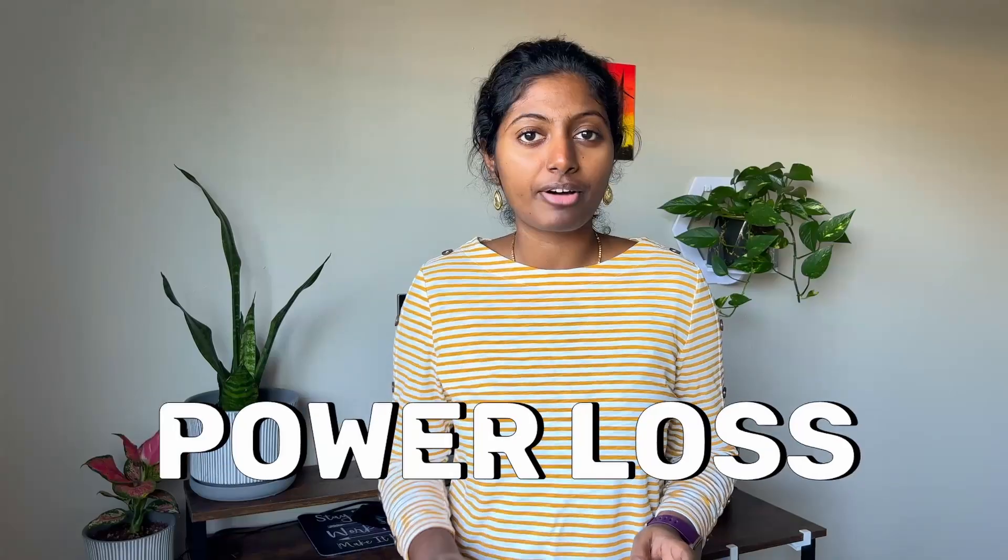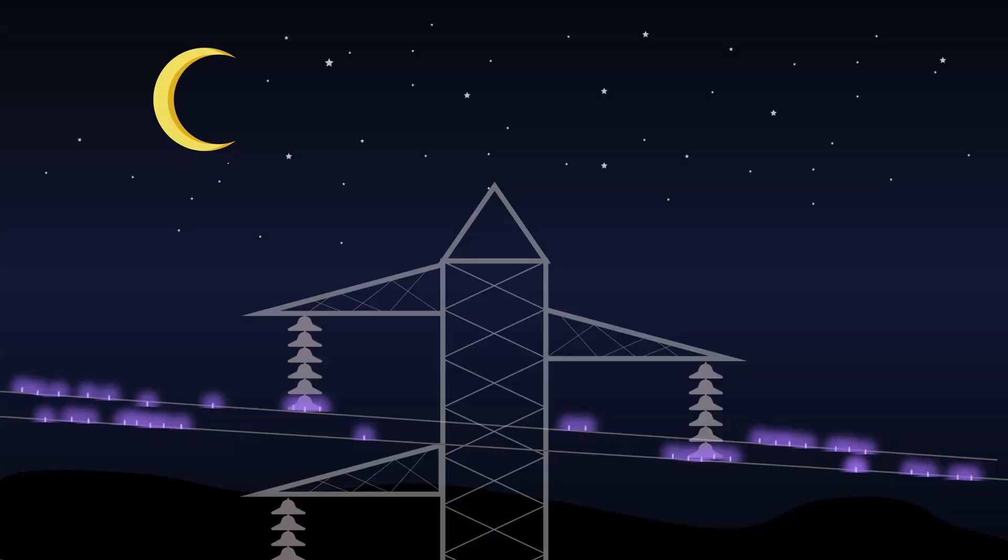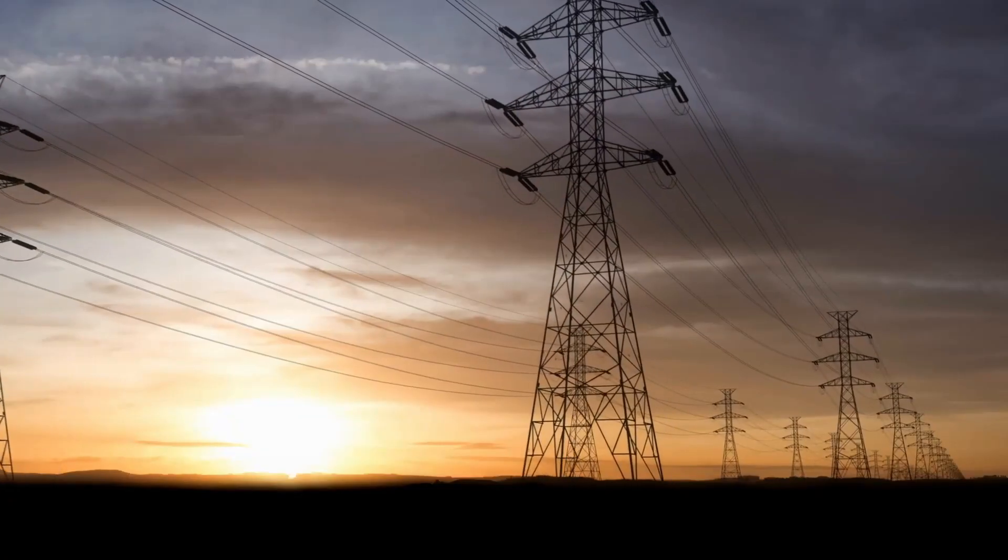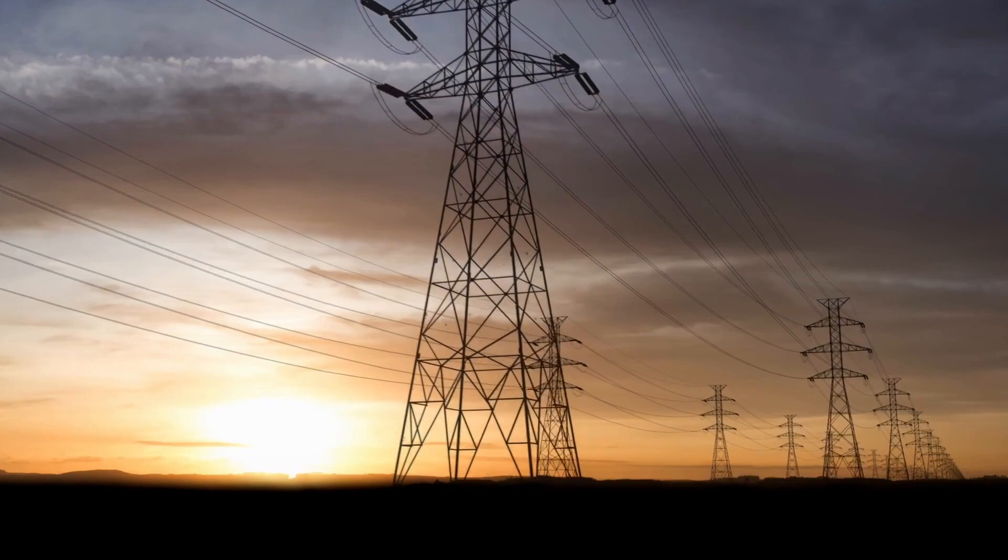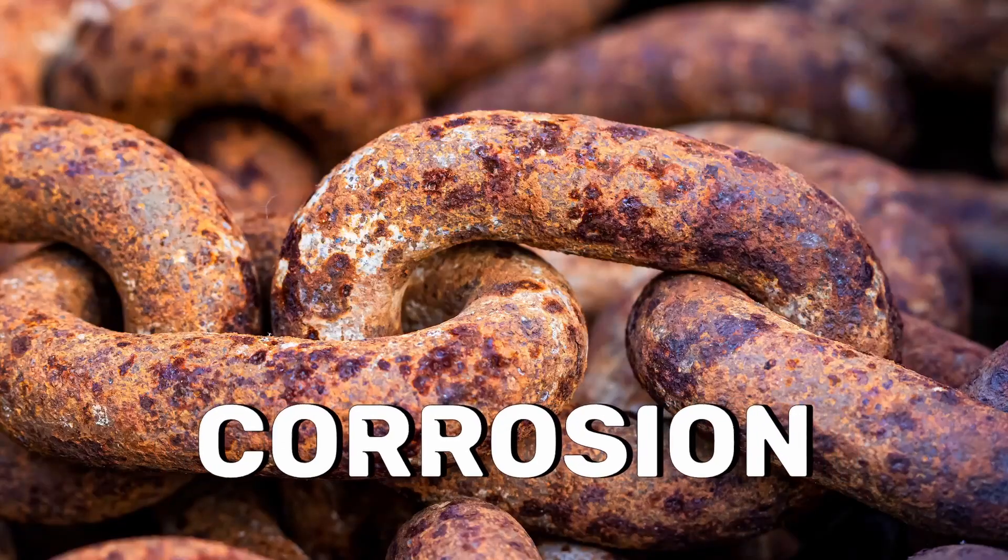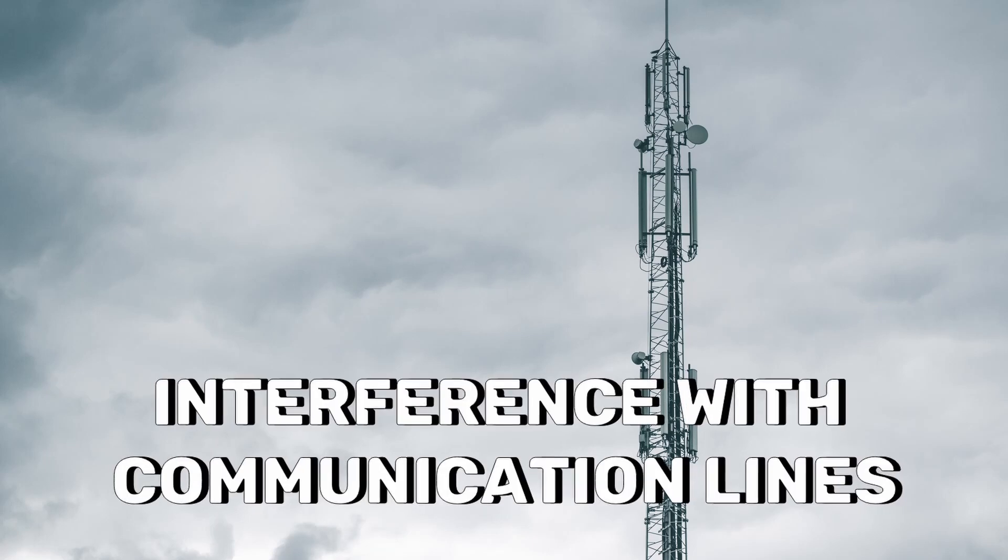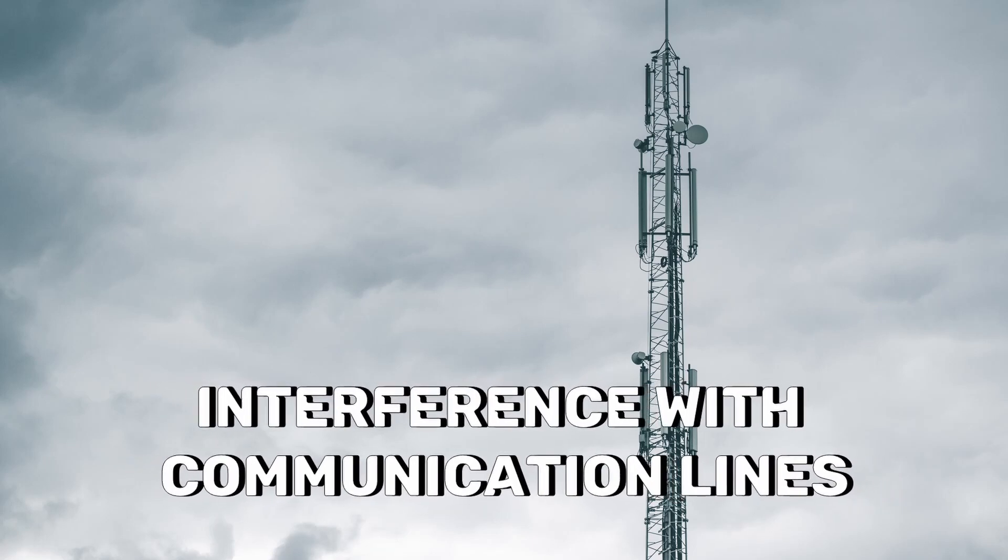First one is the power loss. Here the power is dissipated as heat and the violet glow. The second one is the ozone gas produced by corona may cause corrosion of the conductor. The third one is that it may cause interference with neighboring communication lines.